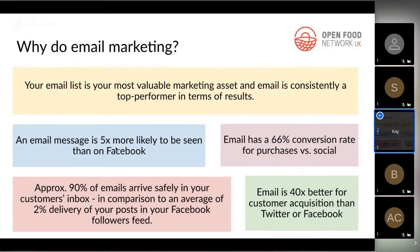Because of the algorithm, an email message is five times more likely to be seen than a post on Facebook by your customers. I'll share these slides on the Marketing Hub. Another stat: 90% of emails arrive safely in your customers' inbox, compared to an average of 2% delivery of your posts on Facebook due to the algorithm. It's a really solid way of reaching your customers.